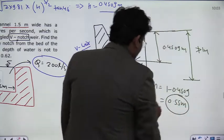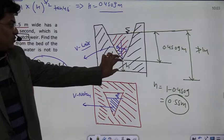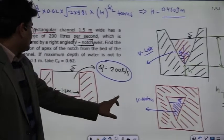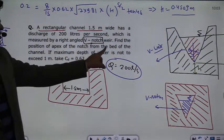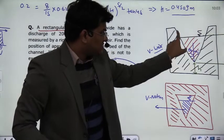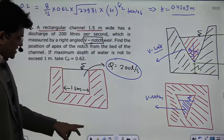So here you have the answer: how much maximum you can get depth from the vertex to the bottom of the channel. So what was asked? Find the position of the apex of the notch from the bed of the channel. So this is the bed of the channel, here is the notch, the vertex, the apex. The depth, so the answer was h from here. The total depth was told.